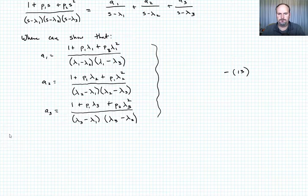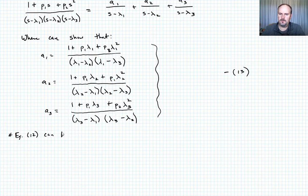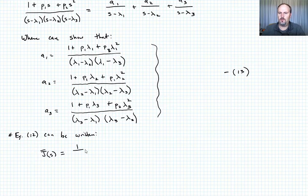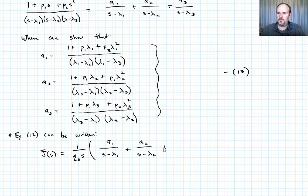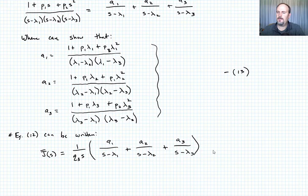Using these partial fractions, equation twelve can then be written as J bar of S equals one over Q3 S, times the quantity A1 over S minus lambda one, plus A2 over S minus lambda two, plus A3 over S minus lambda three. Call that equation fourteen.